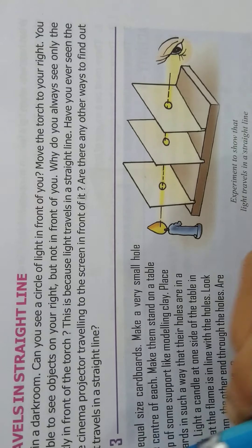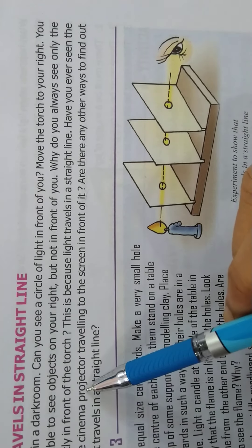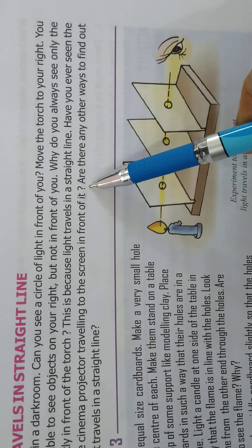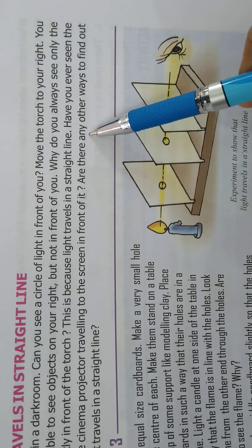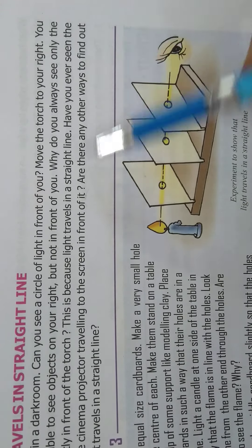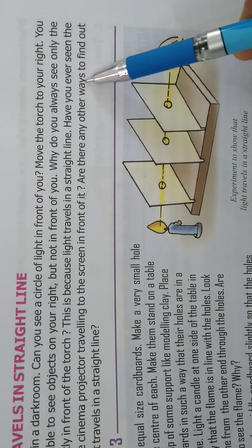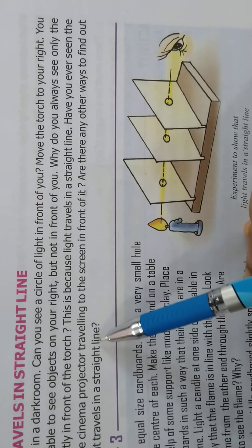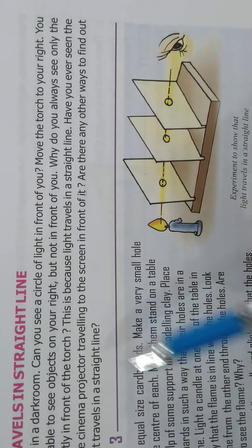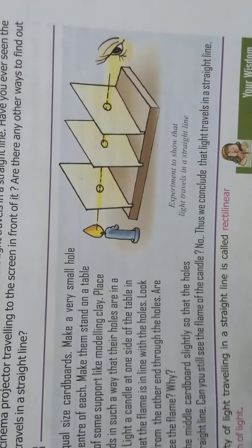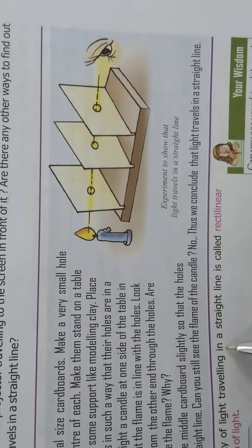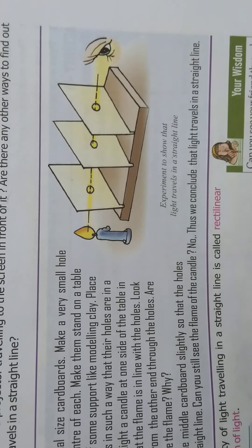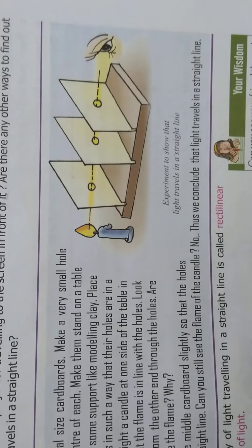Have you ever seen the light from the cinema projector traveling to the screen in front of it? Are there any other ways to find out whether light travels in a straight line? The property of light traveling in a straight line is called rectilinear propagation of light.